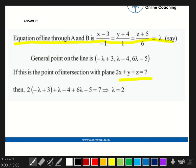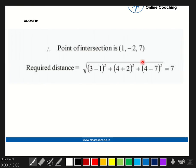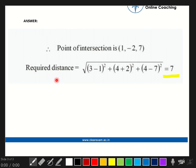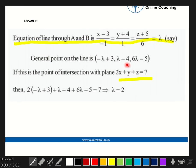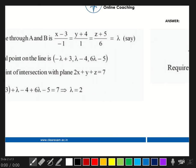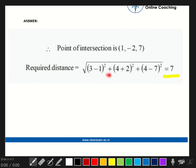Now we have got two points from this: one we calculated and one was given to us. By using the distance formula, we can find the distance between the two points, which will be equal to 7.